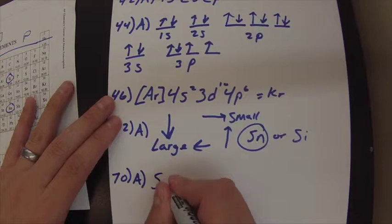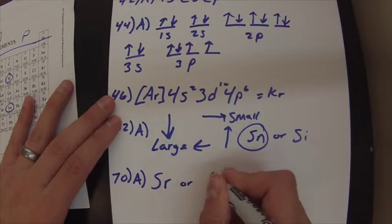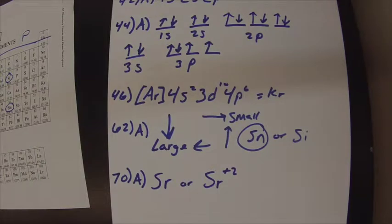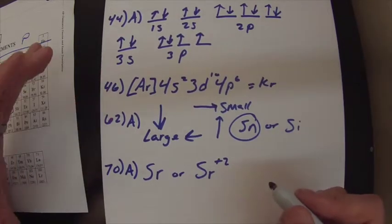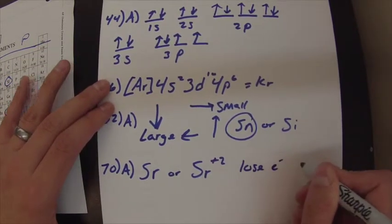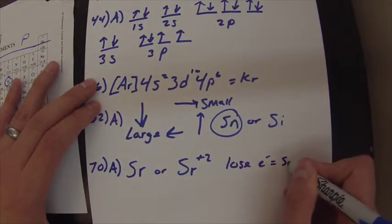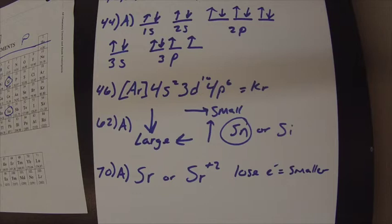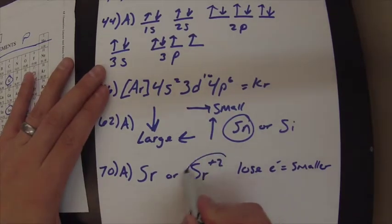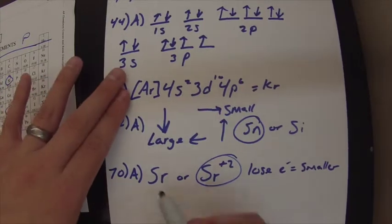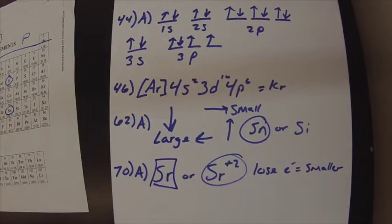So this is strontium or the strontium plus 2 ion. If you think about it, if you lose electrons, you're going to get smaller. Right? Lose electrons equals smaller. So this guy lost electrons, so it's smaller. But it asks for the larger, so the strontium is larger.